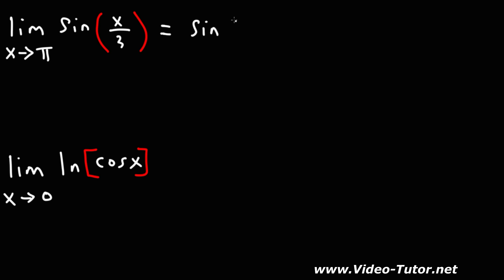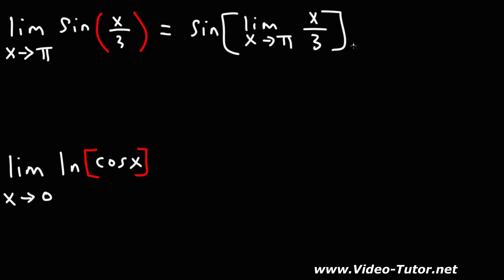So we can write sine, and we could put the limit on the inside: the limit as x approaches pi of the expression x over 3. Using direct substitution, we could replace x with pi, so this becomes sine of pi over 3.